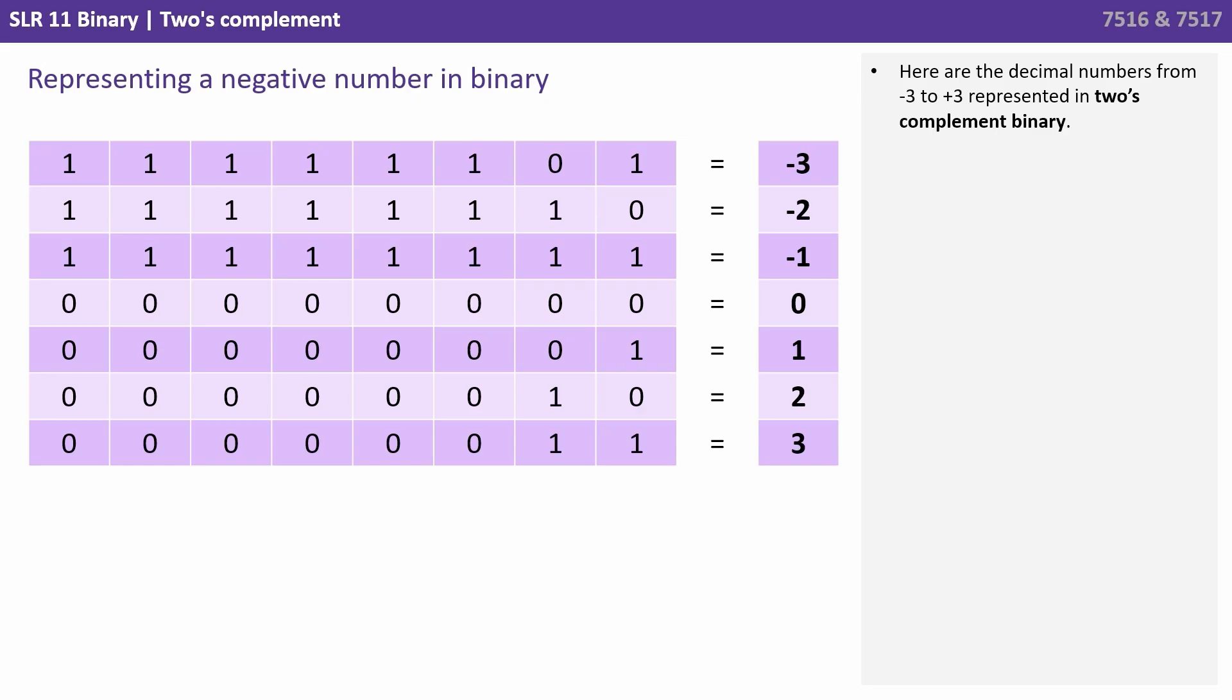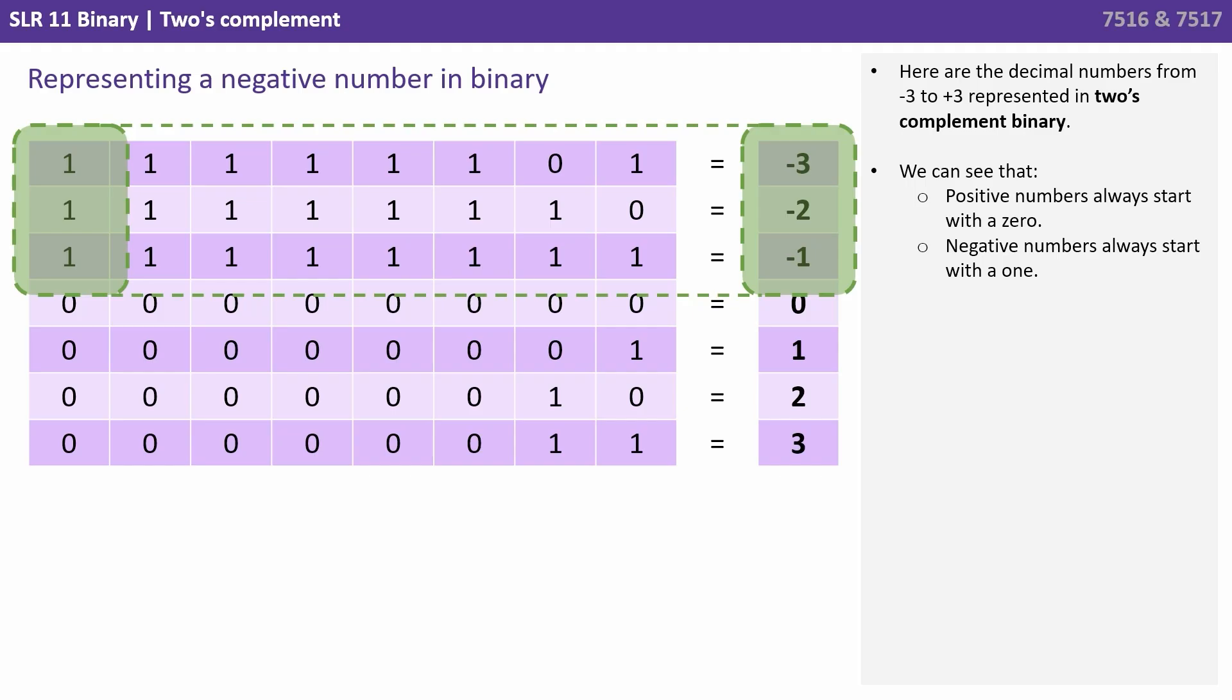Here are the decimal numbers from minus three to positive three represented in two's complement binary. We can see that positive numbers always start with a zero and negative numbers always start with a one.